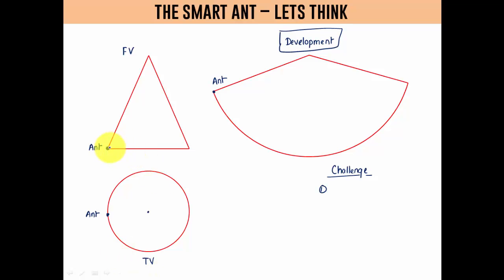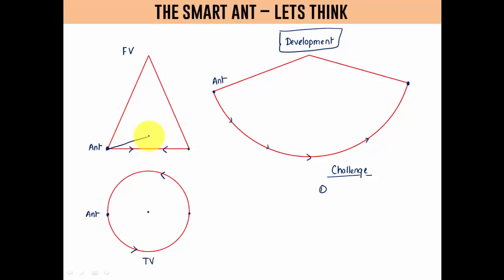Some of you may say the ant is going to travel along the circular base — it goes forward, reaches here, and then returns back to its initial position. That's one way. Others may say the ant will travel in front of the cone and then back — that's also a valid answer. But we have to be very precise and concrete in whatever we are answering.